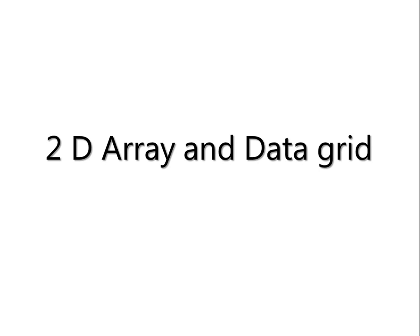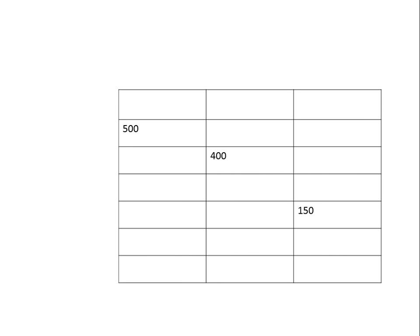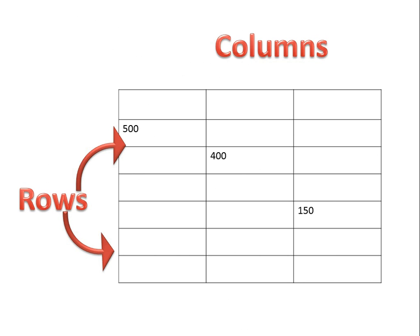On today's topic, we will be talking about 2D arrays and data grids. When I talk about a 2D array, I want you to picture a tabular type of entry that will have rows and columns. A data grid will look really the same.